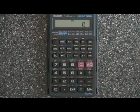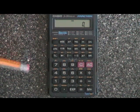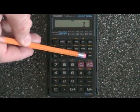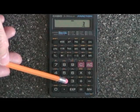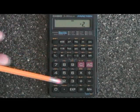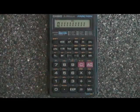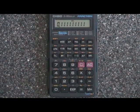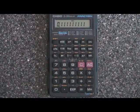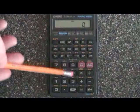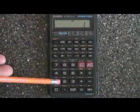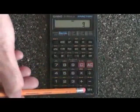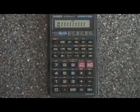To find 3 to the negative 2 in our calculator, we punch in a 3, we hit the x to the y key, and then we punch in a negative 2 and hit equals. We get this decimal 0.1111 repeating. This is the decimal version of 1 ninth. Let's prove that. 1 divided by 9 equals 0.11 repeating.